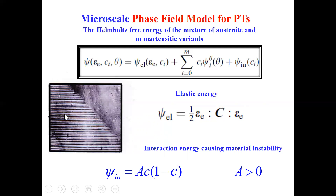This is the austenite–martensite interface. If we speak about large scale, we don't want to reproduce all millions of interfaces. So the only order parameter is the volume fraction of martensite at this interface. This is a typical expression for interaction energy from micromechanics — considering energy of internal stresses or surface energy. We also have a volume fraction of each martensitic variant, which don't contribute to interaction energy or introduce instability; they are just internal variables.